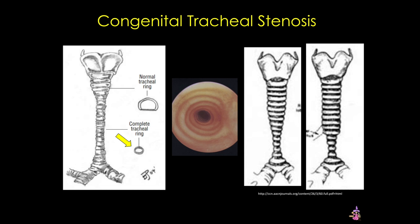Congenital tracheal stenosis is usually associated with other anomalies such as gastrointestinal, renal, or cardiovascular abnormalities, suggesting that the embryological defects occur early, perhaps within the fourth week of development. Milder forms likely arise between weeks 8 to 10 when the tracheal cartilage is developing, and this is thought to be from abnormal cartilage growth as opposed to muscular growth in the trachea.